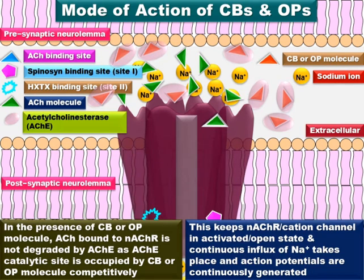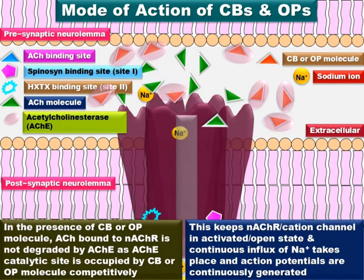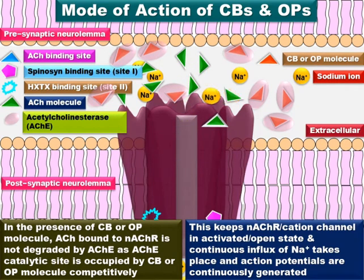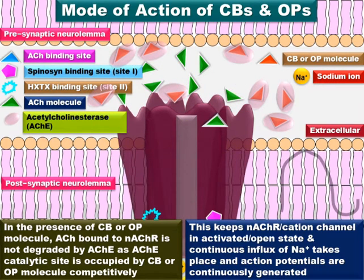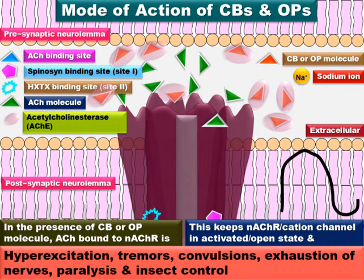By occupying the catalytic site, the insecticides inhibit the function of acetylcholinesterase in breaking down the acetylcholine molecules in the synapse and those bound to the nicotinic acetylcholine receptor. This keeps the nicotinic acetylcholine receptor cation channel complex in an open or activated state for longer than usual, resulting in continuous sodium ion influx and continuous depolarization of the postsynaptic membrane, leading to repetitive nerve firing and nerve exhaustion. This repetitive firing causes hyper-excitation, convulsions, tremors, paralysis, and finally insect death.